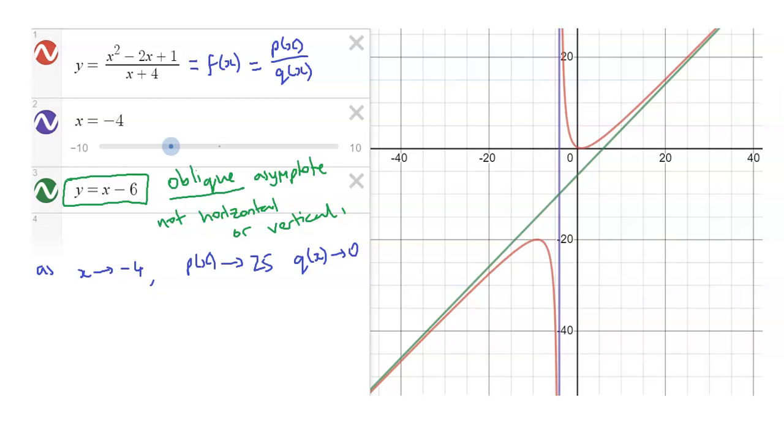And now, I suggest you pause the video and see if you can figure out where this line y equals x minus 6 came from. Why does the function get closer and closer towards x minus 6 as x goes in the infinity or negative infinity directions?